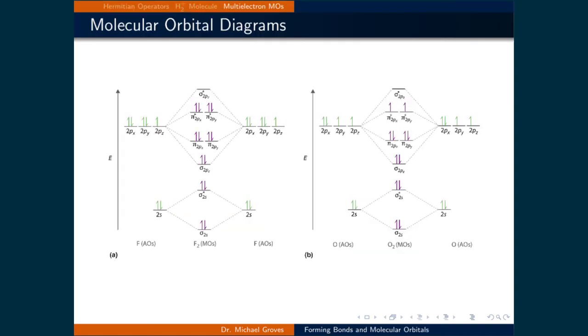Expanding the basis set of atomic orbitals to include p orbitals, we can make molecular orbital diagrams for diatomic atoms using second row elements. Illustrated here are diagrams for F2 and O2. In both cases, the two s orbitals interact to make bonding and antibonding orbitals,